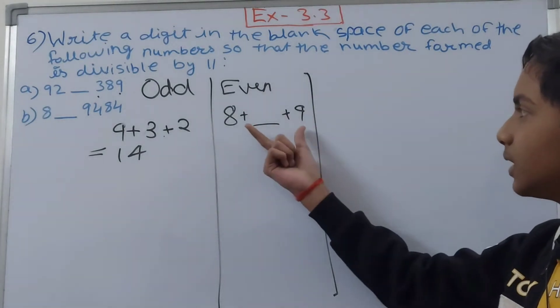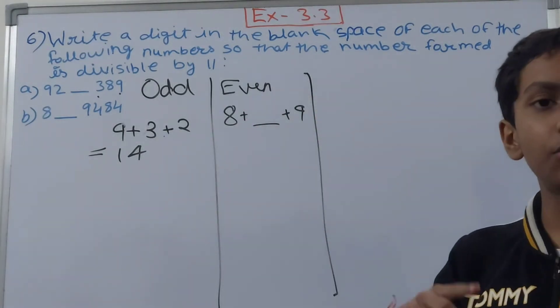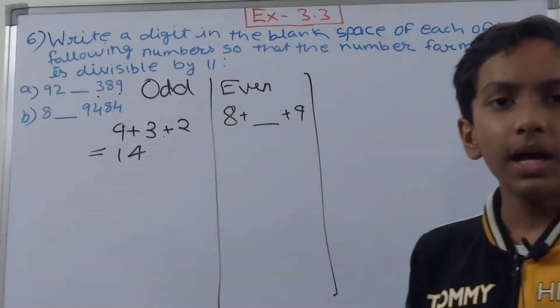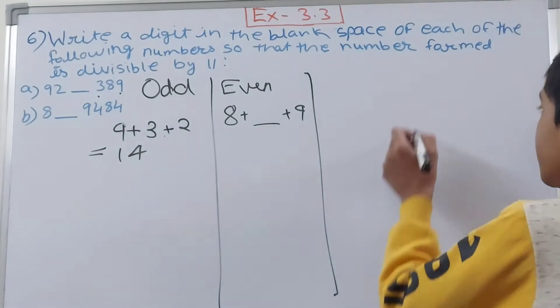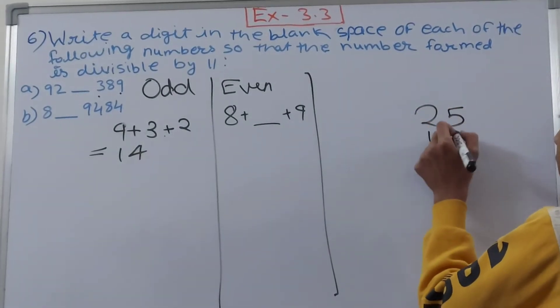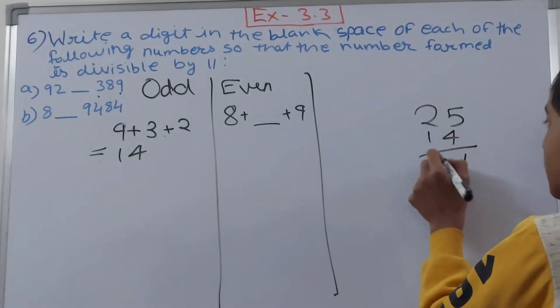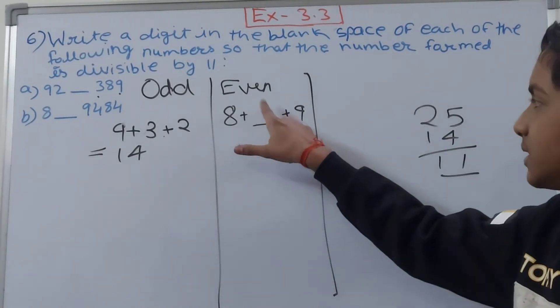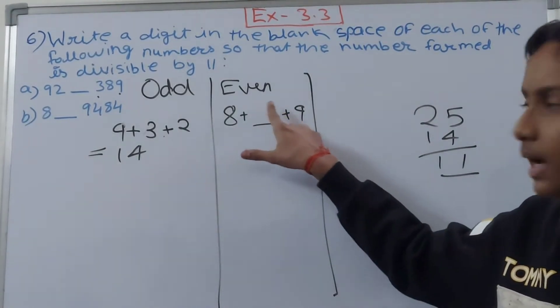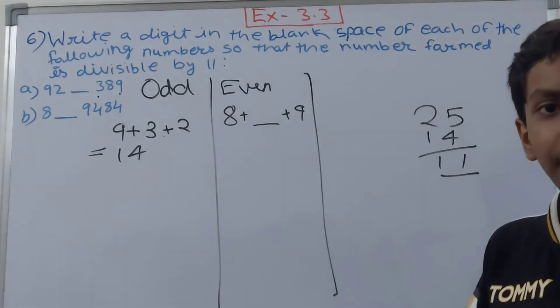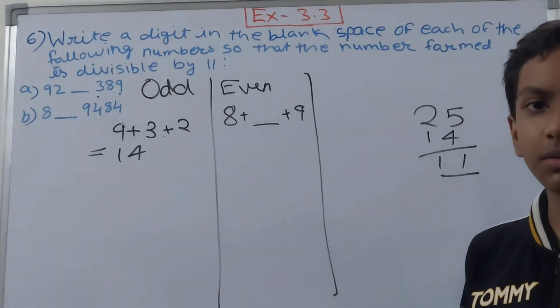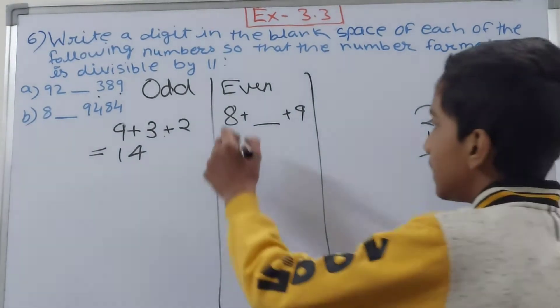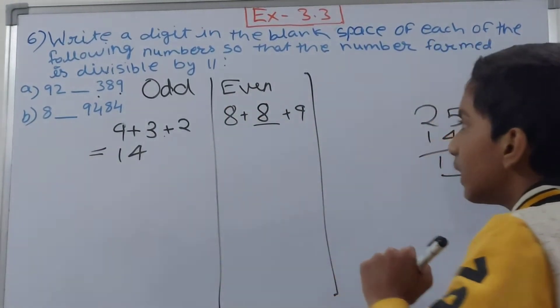Now if we have to turn this 17 into 25, and then subtract 14 from 25 what we will get. 25 minus 14 gives us 11. So we need to have something that will turn this 8 plus 9 which is 17, plus that something to 25. The difference between 17 and 25 is 8.